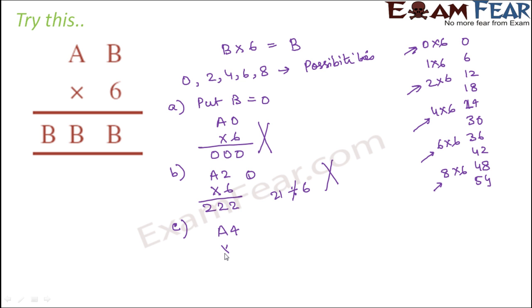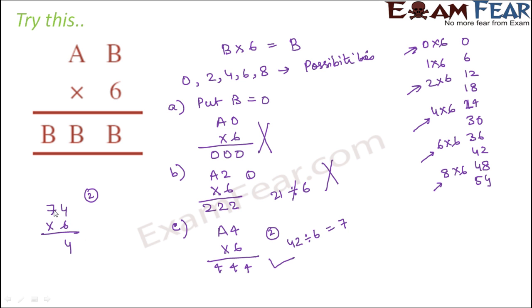Trying b=4: a4 × 6 = 444. 6×4=24, carry 2. Subtract the carry from 44 to get 42. Is 42 divisible by 6? Yes — 6×7=42. So a=7. Verifying: 74×6 — 6×4=24 carry 2; 6×7=42+2=44. The result is 444, confirming a=7, b=4.